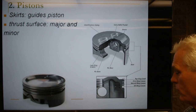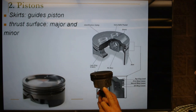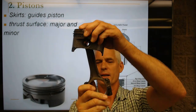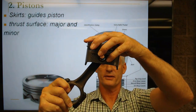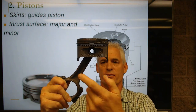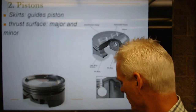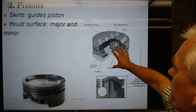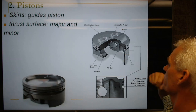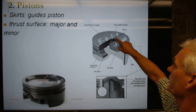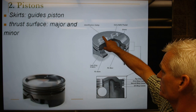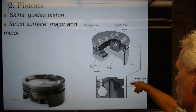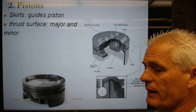There's a major and minor thrust surface. When the piston goes up and comes around, the explosion forces the piston to the major thrust surface side, and this is the minor thrust surface. A piston diagram shows the valve relief pocket, a dome for higher compression, a stamping for size, ring grooves, and ring lands.